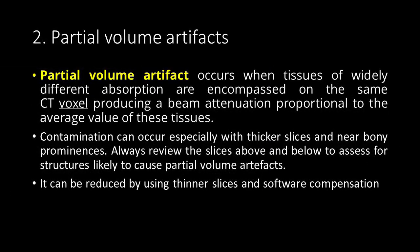Next, we will discuss partial volume artifacts. Partial volume artifact occurs when tissues of widely different absorption are encompassed in the same CT voxel, producing a beam attenuation proportional to the average value of these tissues. Contamination can occur especially with thicker slices and near bony prominences. Always review the slices above and below to assess for structures likely to cause partial volume artifacts. It can be reduced by using thinner slices and software compensation.